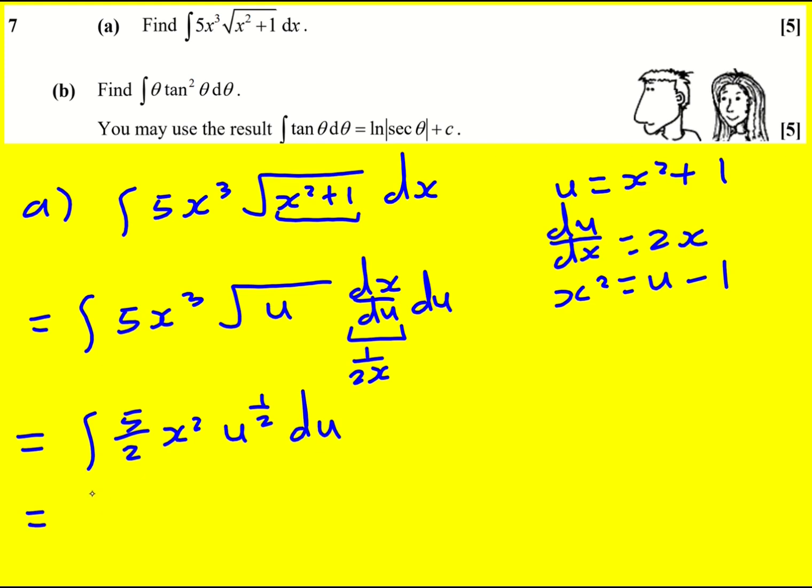So it's going to be the integral of 5 over 2 times u minus 1 times u to the half. So 5 over 2 u to the 3 over 2 minus 5 over 2 u to the half. This is manageable now, brilliant.